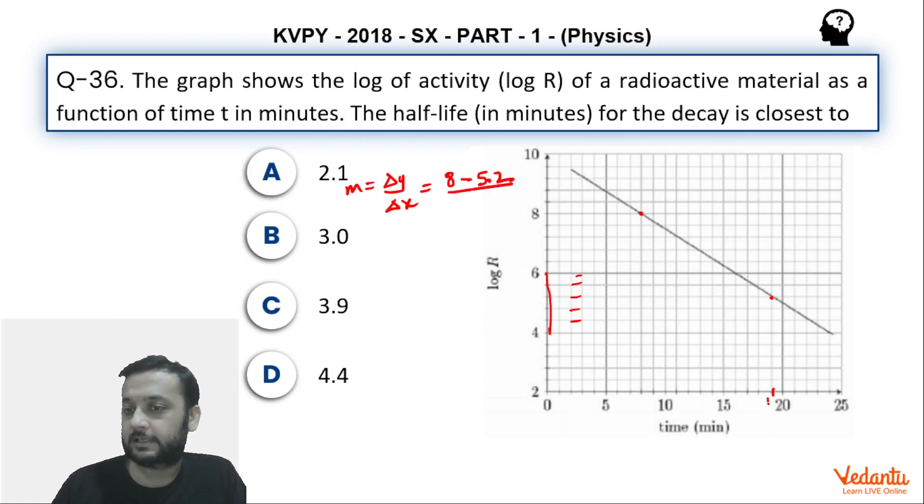So this can be written as 19, and this can be written as 8. Correct? So 19 minus 8. So this gives us 2.8 divided by 11.